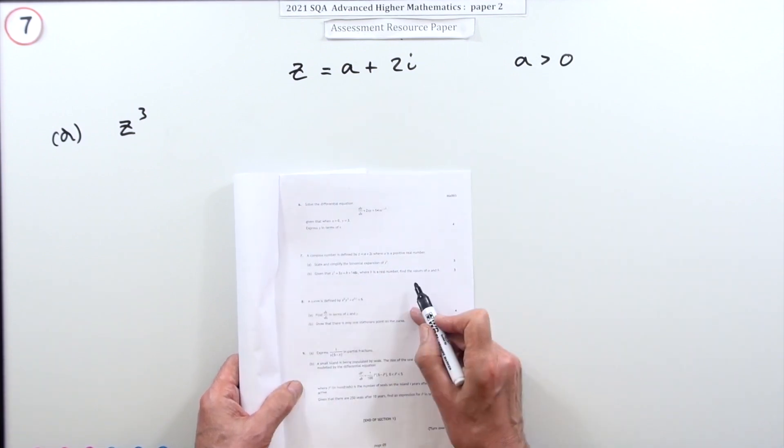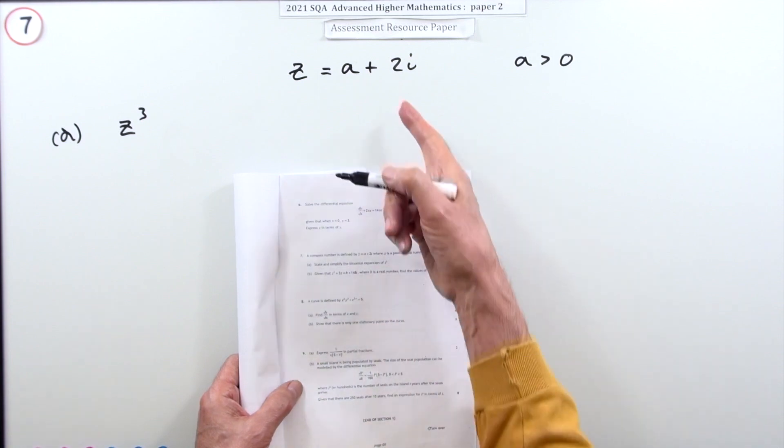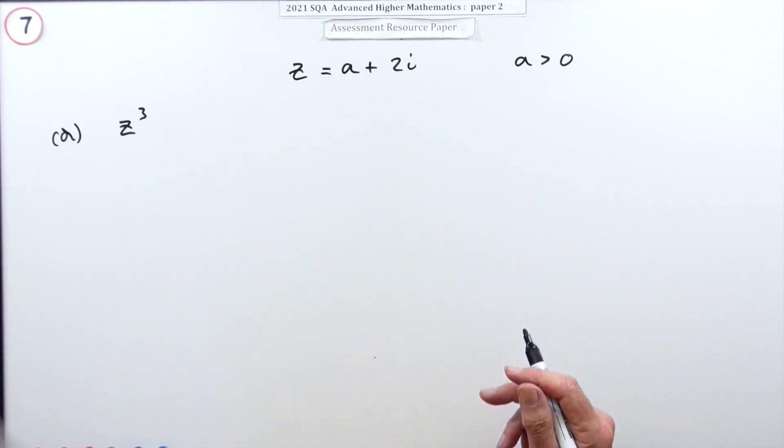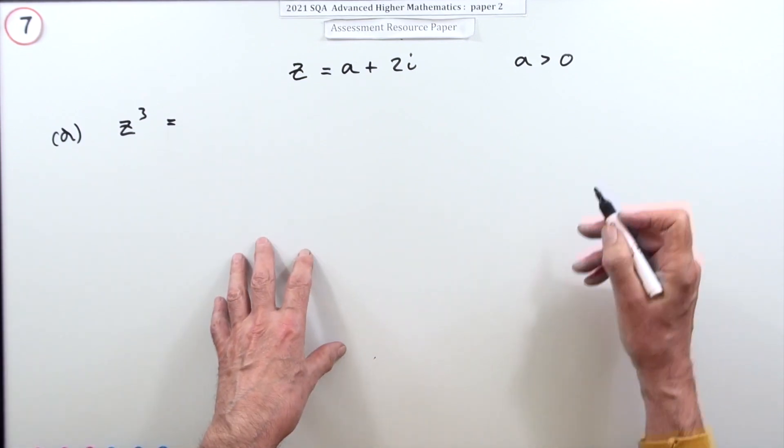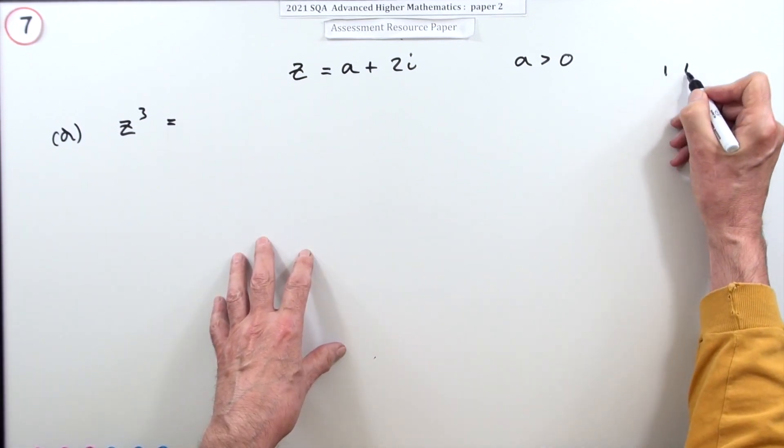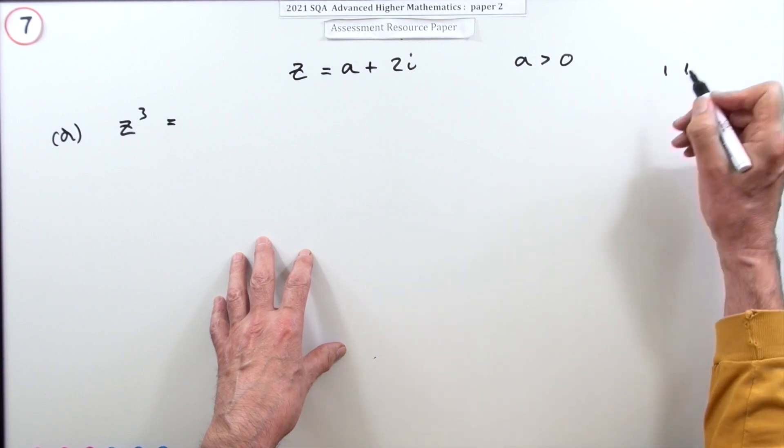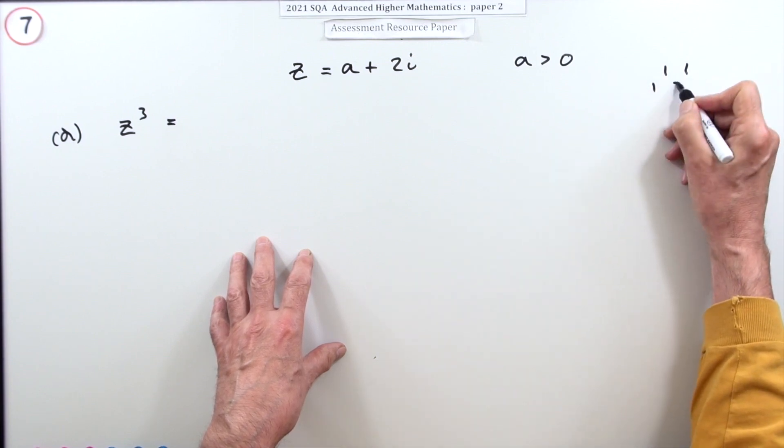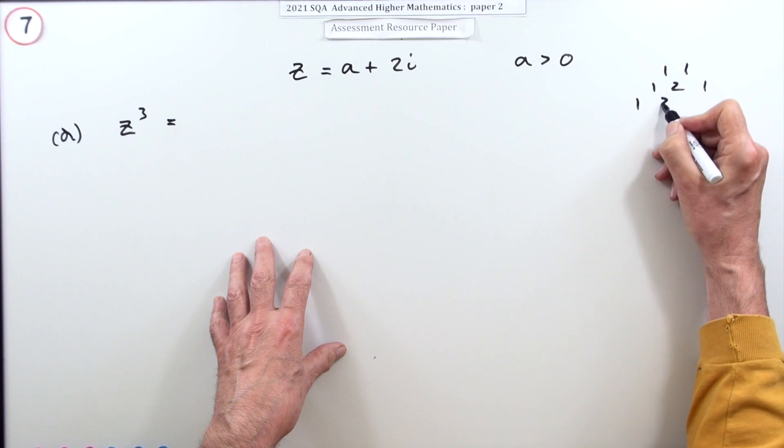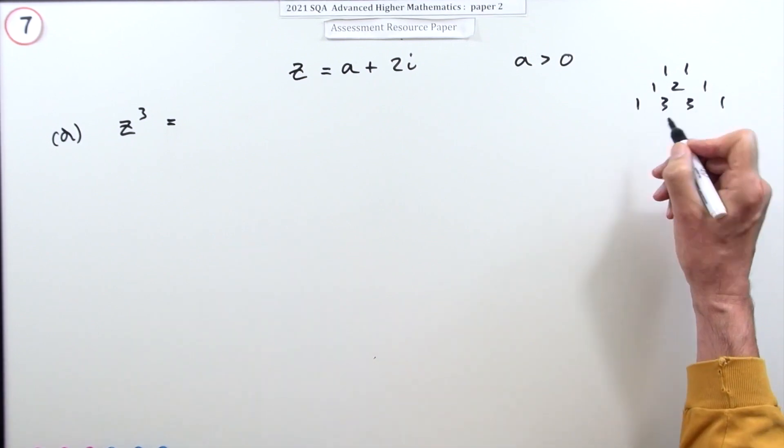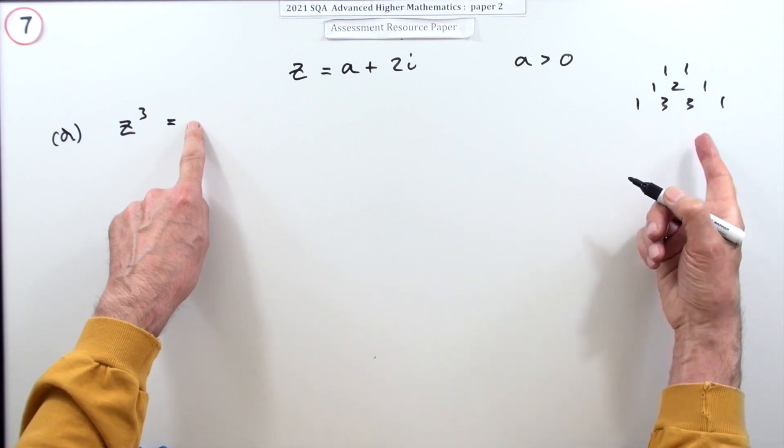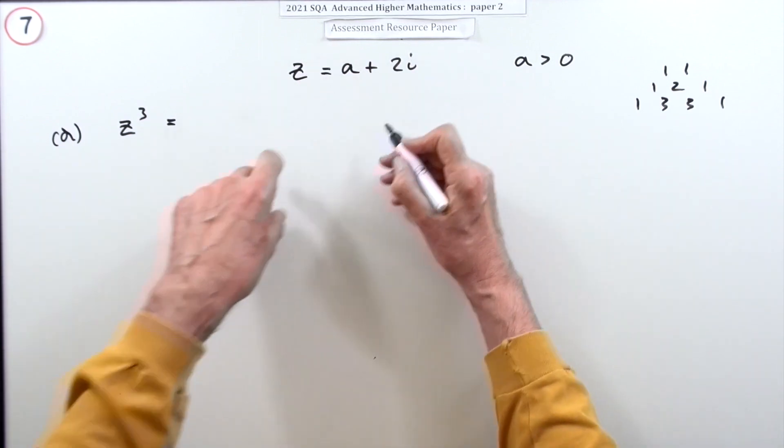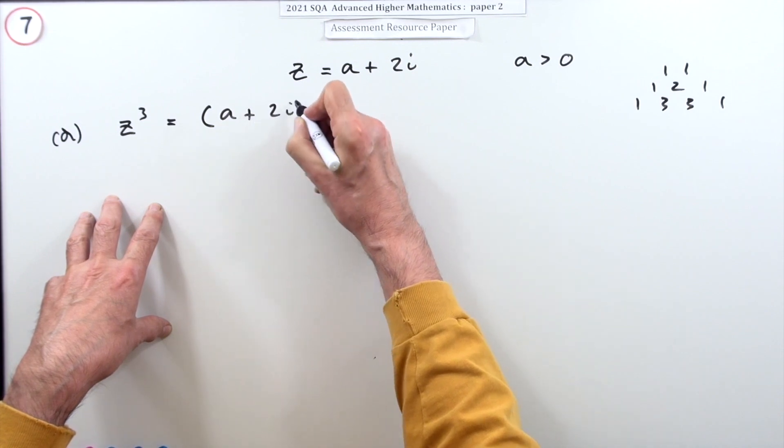Part a: State and simplify the binomial expansion of z cubed for three marks. You probably remember the coefficients of the binomial expansion, but if you don't, just put down Pascal's triangle very quickly: one, one plus one equals two, one, one plus three plus three plus one should be one, three, three, one. So the binomial expansion with those coefficients would just be these two parts: a plus 2i to the power three.